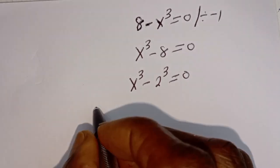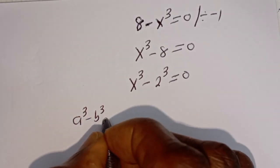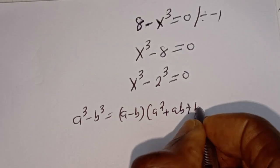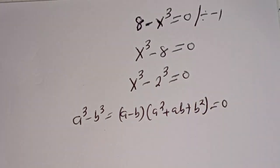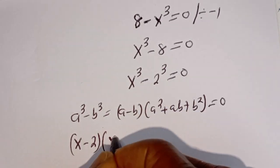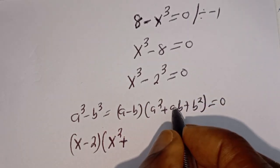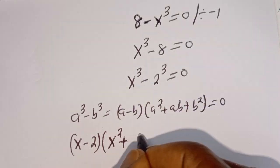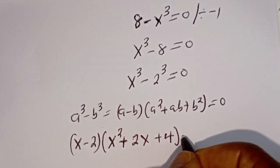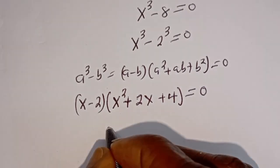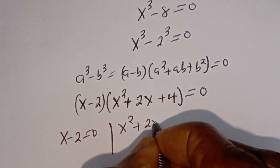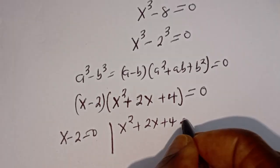From here we have s to the power of 3 minus 8 is equal to 0, which is s to the power of 3 minus 2 to the power of 3 is equal to 0. Applying the same difference of cubes rule — a³ minus b³ equals (a minus b)(a squared plus ab plus b squared) — we get (s minus 2)(s squared plus 2s plus 4) is equal to 0. We have two cases: s minus 2 equal to 0, and s squared plus 2s plus 4 equal to 0.